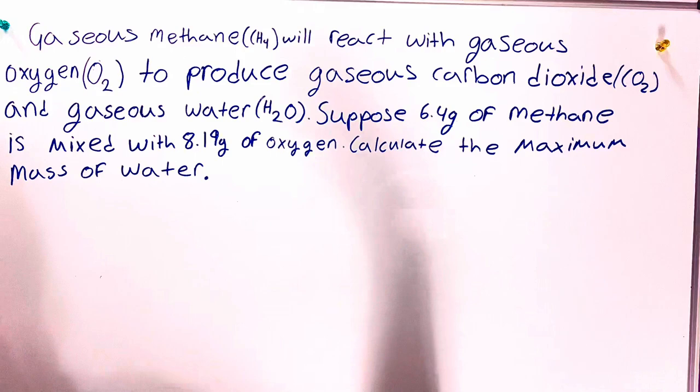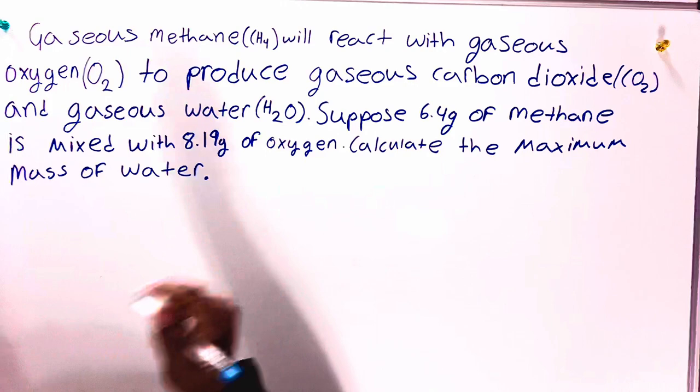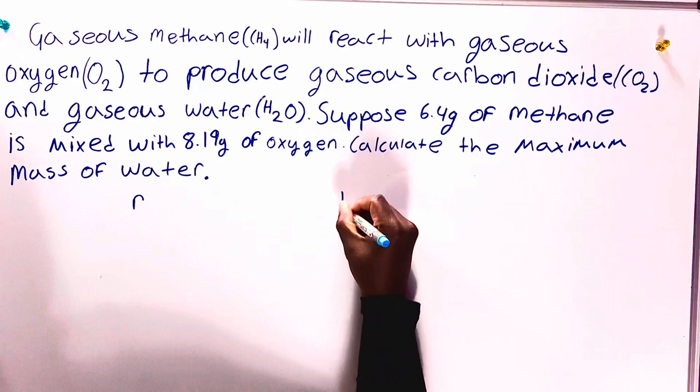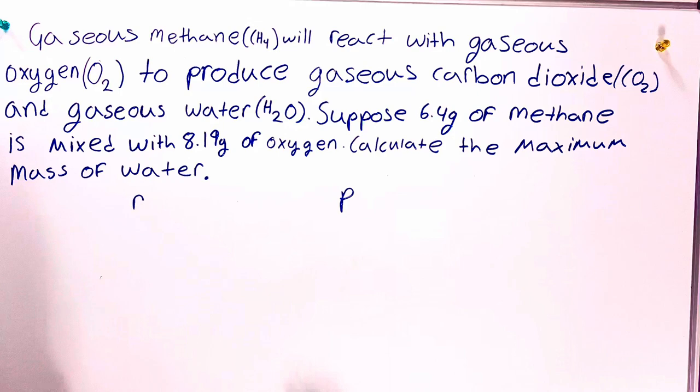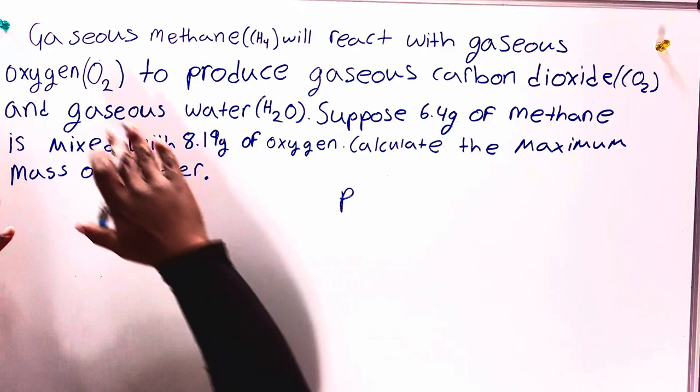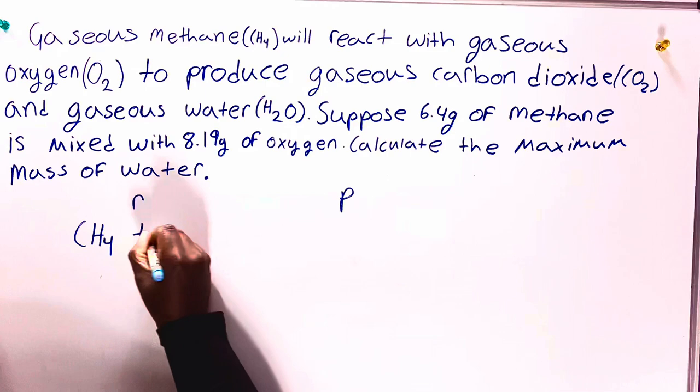When we're given a gram-to-gram conversion, we need to figure out what is the chemical equation. First, we need to figure out what's our reactants side, which substances are reacting to each other, and what's our product side. I will just label R for reactants, P for products. Let's look at the question. Which substances are reacting with each other? We have gaseous methane. We put that here.